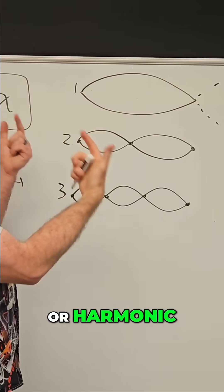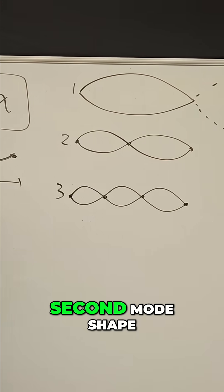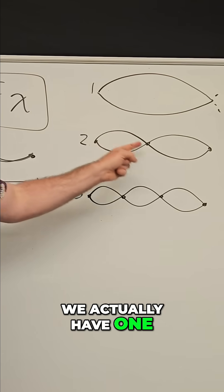So that means in the first mode shape or harmonic, we have half of a wavelength. Well, how many wavelengths do we have in the second mode shape? We actually have one full wavelength.